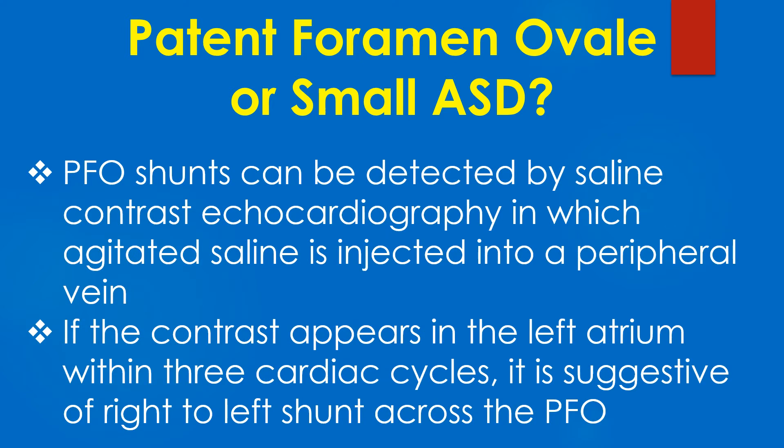PFO shunts can be detected by saline contrast echocardiography, in which agitated saline is injected into a peripheral vein. If the contrast appears in the left atrium within three cardiac cycles, it is suggestive of right to left shunt across the PFO.